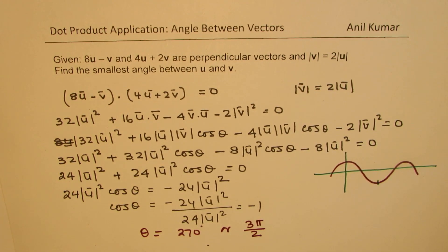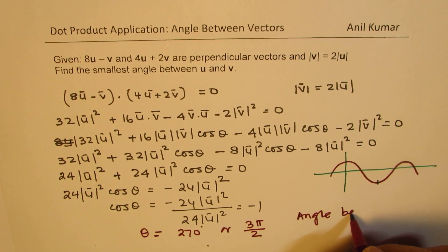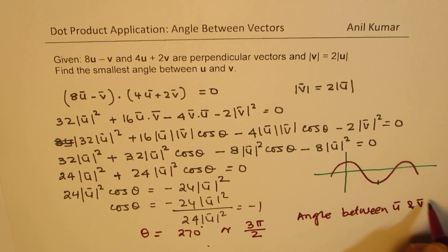So that becomes the closest angle which will satisfy the given condition. Clearly, we get that the angle between the vectors u and v is 270 degrees or 3 pi by 2 radians.